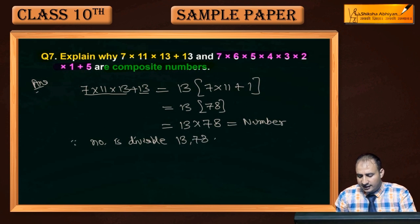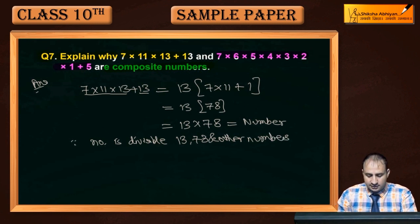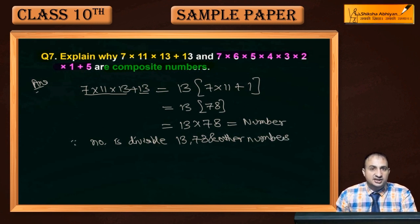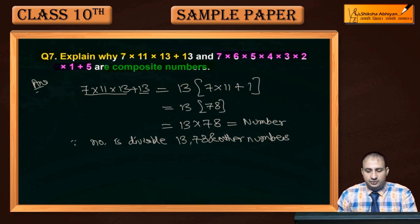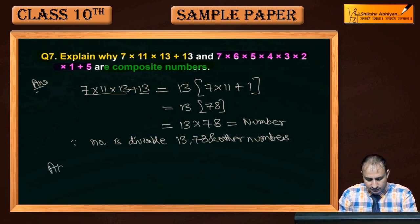78 and other numbers — 2 से भी divide होगा — and other numbers। अब जब यह other numbers से divide हो रहा है तो यह prime तो हो नहीं सकता, composite number होगा।